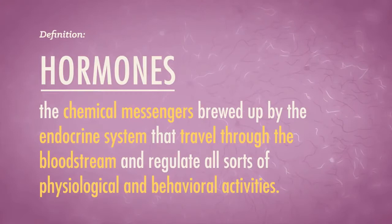Others question the model's clinical focus on only physiological factors, arguing that cultural attitudes, psychological and relationship factors, and other external details should also be considered when looking at sexual response. Before we move on to the psychology of sex, we've got to talk about hormones — those chemical messengers brewed up by the endocrine system that travel through the bloodstream and regulate physiological and behavioral activities, from growth to digestion to sleep to sex.